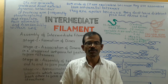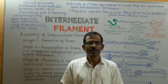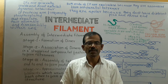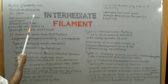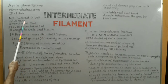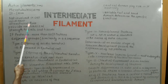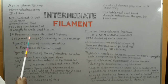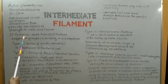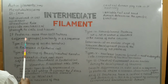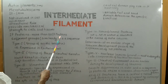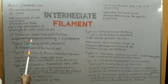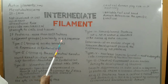Today we shall discuss about intermediate filament. The name intermediate filament has been given because its diameter is intermediate between the diameter of actin filament and that of microtubule. Intermediate filaments are not involved in cell movement; they play a structural role by providing mechanical strength to cells and tissues. The intermediate filament consists of a variety of proteins expressed in different types of cells. More than 50 intermediate filament proteins have been identified so far, and these are divided into six different groups on the basis of similarity in amino acid sequence.